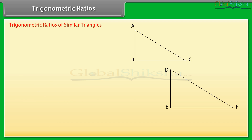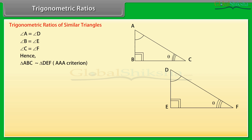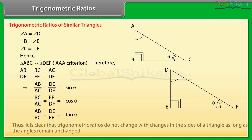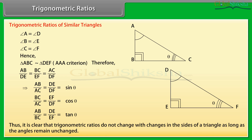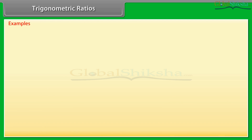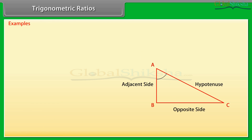Trigonometric ratios of similar triangles: consider triangles ABC and DEF. Angle A equals angle D, angle B equals angle E, angle C equals angle F. Hence, triangle ABC is similar to triangle DEF by the AAA criterion of similarity. Therefore, the corresponding sides of the two triangles are proportional. Thus, it is clear that trigonometric ratios do not change with changes in the sides of a triangle as long as the angles remain unchanged.